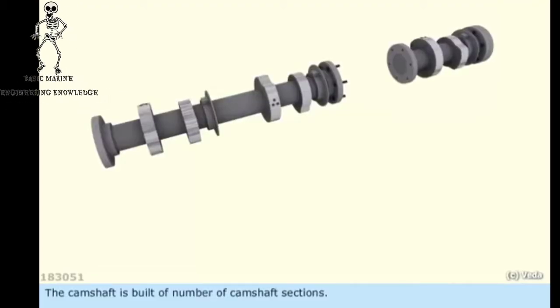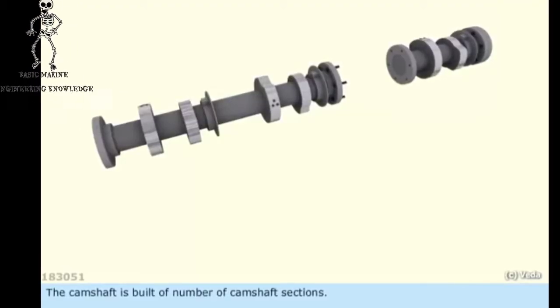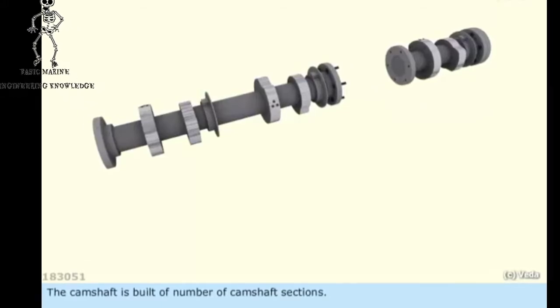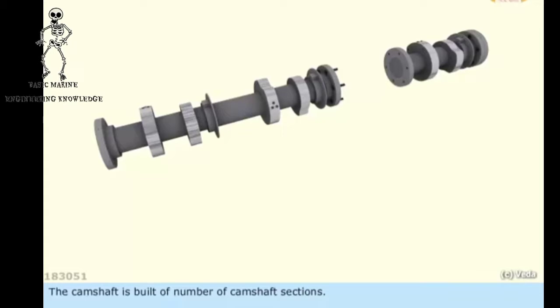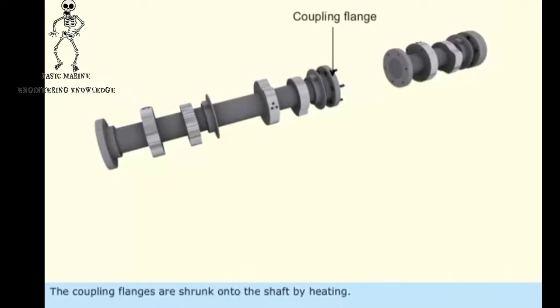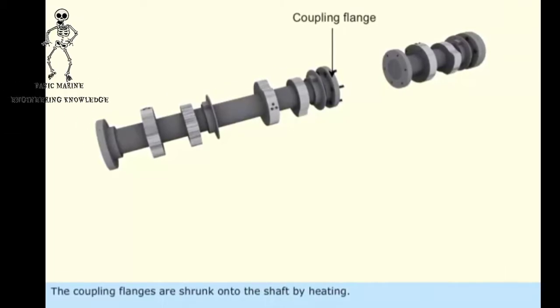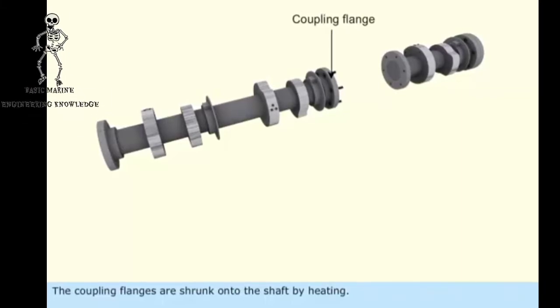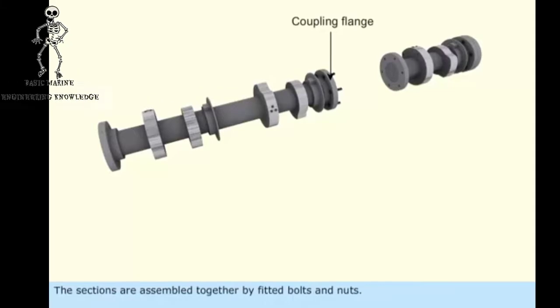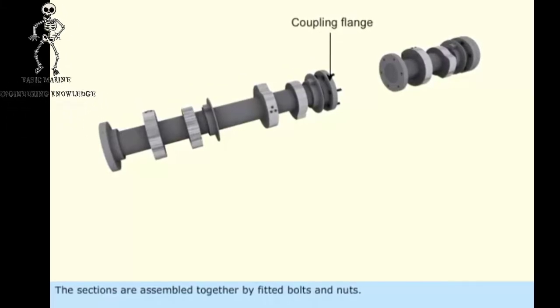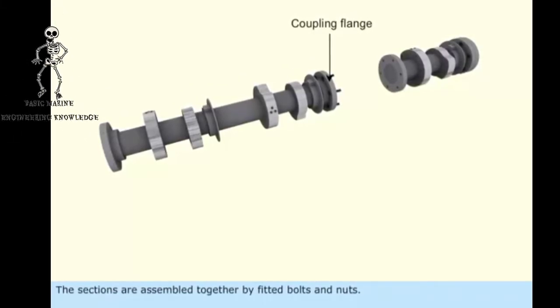The camshaft is built of a number of camshaft sections. The coupling flanges are shrunk onto the shaft by heating. The sections are assembled together by fitted bolts and nuts.